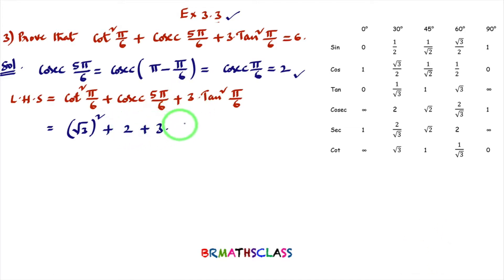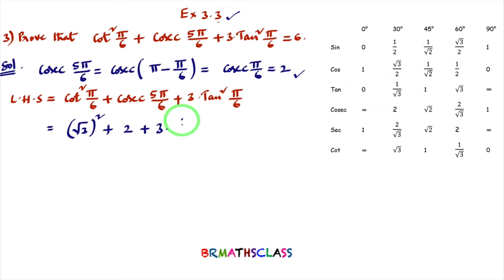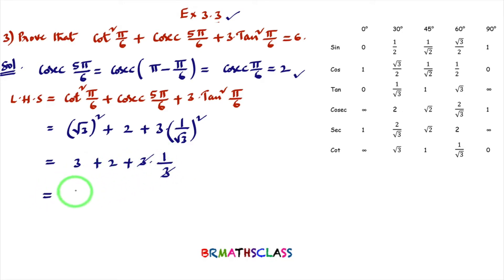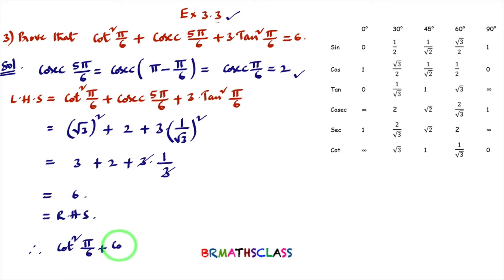Continuing: 3 + 2 + 3 × (1/3). The 3 in the numerator and denominator cancel, giving 3 + 2 + 1 = 5 + 1 = 6. That is the required RHS. Hence we proved: cot²(π/6) + cosec(5π/6) + 3·tan²(π/6) = 6.